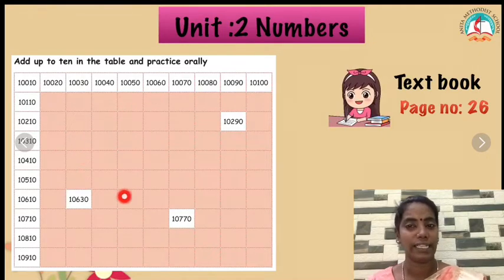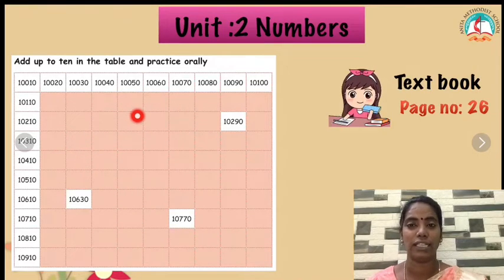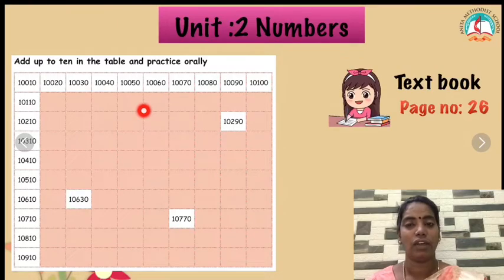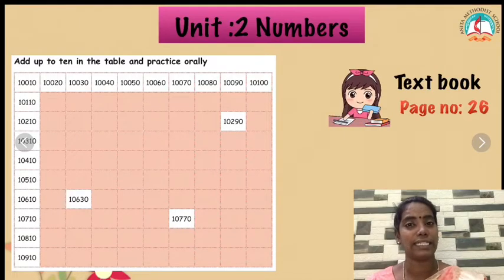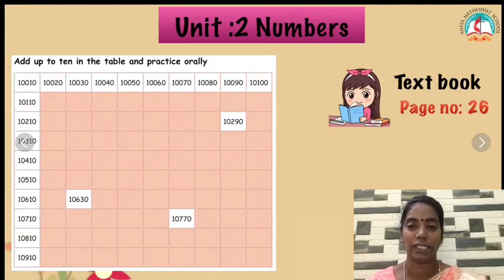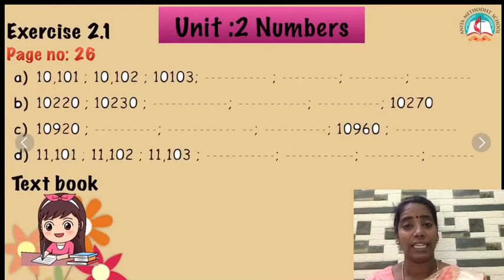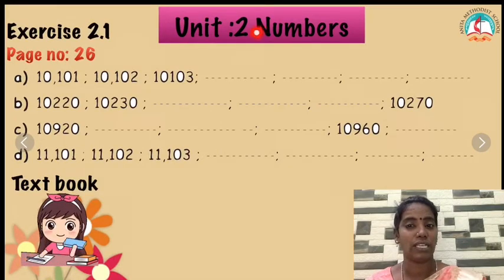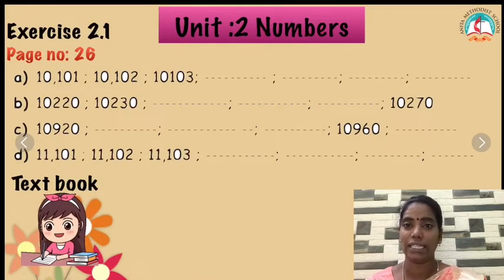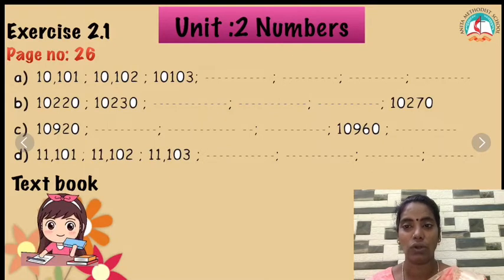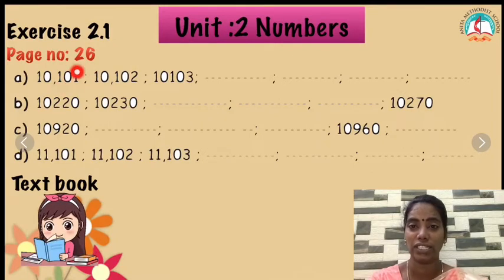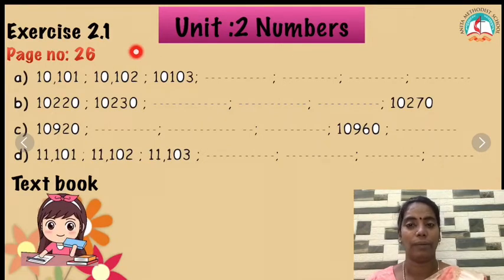The next one we are going to see is: we are going to add up in 1s and 10s place. 10,010 — 10,020 — 10,030. You have to go like this and finish this column.